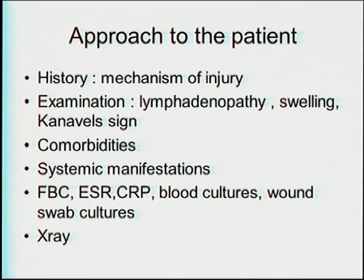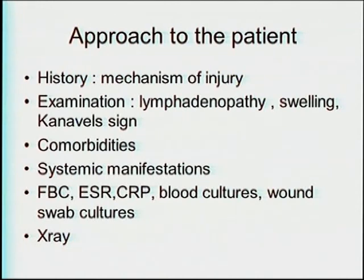The most important thing is your approach to the patient, and for that you need to have a detailed history of the mechanism of injury — whether it is a road traffic accident, an open fracture, a rose thorn injury, or a bite. Then you need to do a detailed examination: check for lymphadenopathy, swelling, and the cardinal sign. You also need to take a detailed history of comorbidities, especially gout and rheumatoid arthritis.